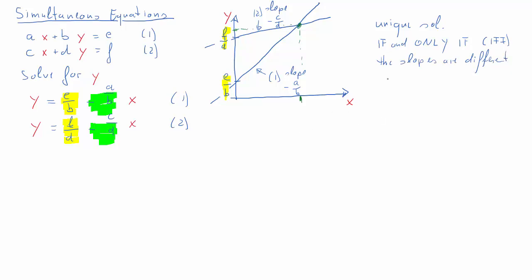So what happens if the slopes of the two lines are actually equal? In that case we have to differentiate between two cases. The first case is where we end up having no solution, and that is if the slopes are equal and the two intercepts are different.